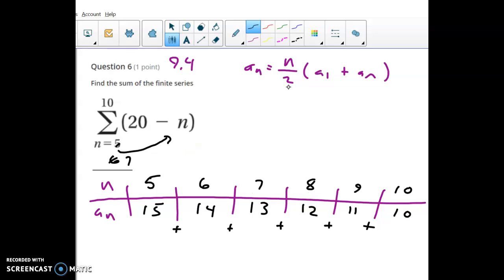But the other route would be to use the formula. So this is an arithmetic pattern because it goes down one each time.